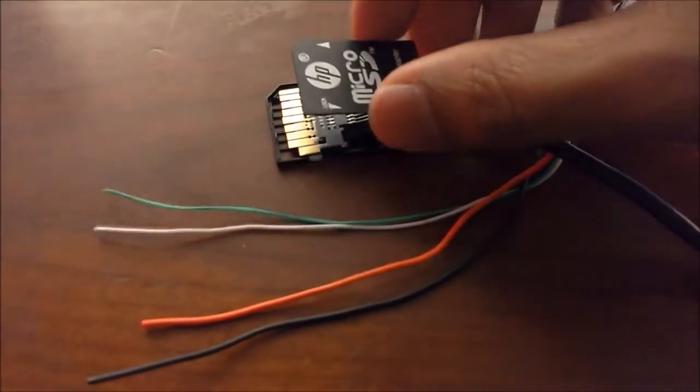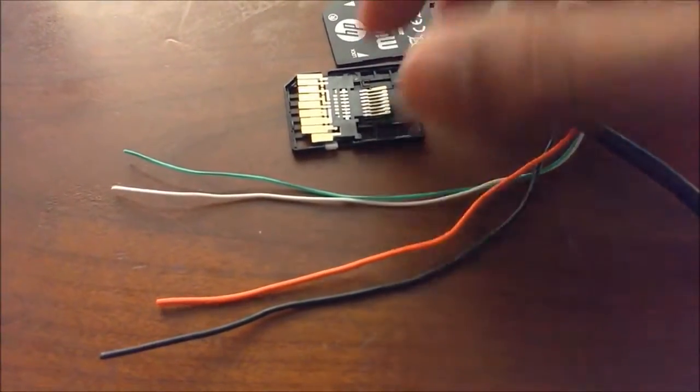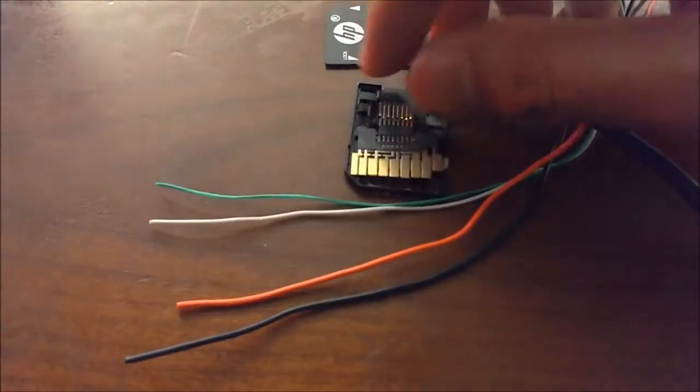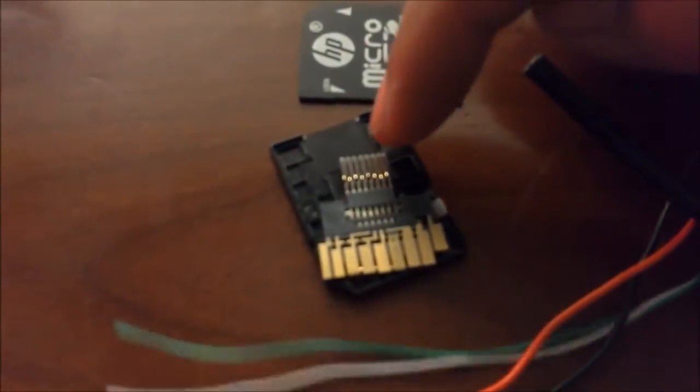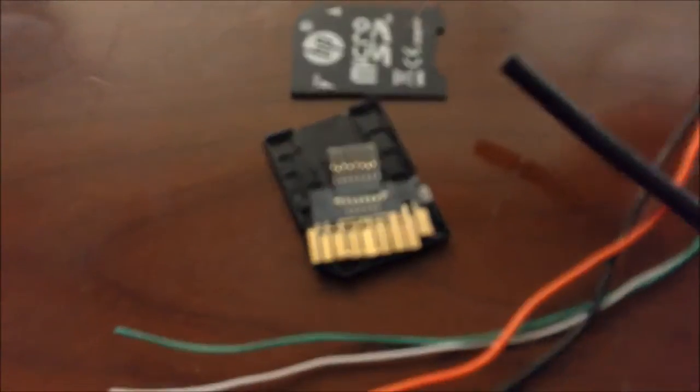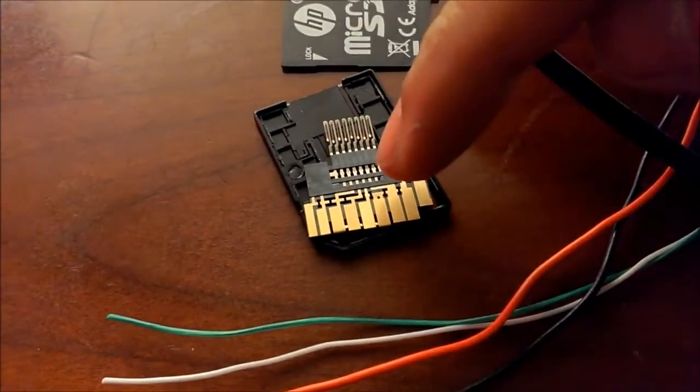So I'm going to be taking apart this micro SD card adapter and I'm going to solder 6 wires onto this. On this side we have 8 pins and on this side we have 9 pins.